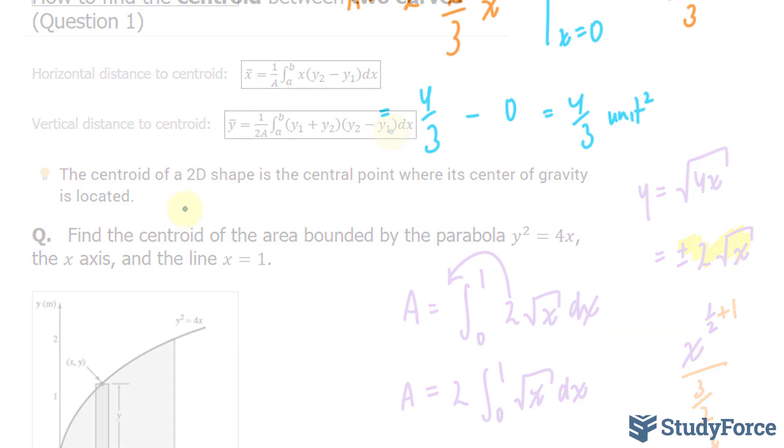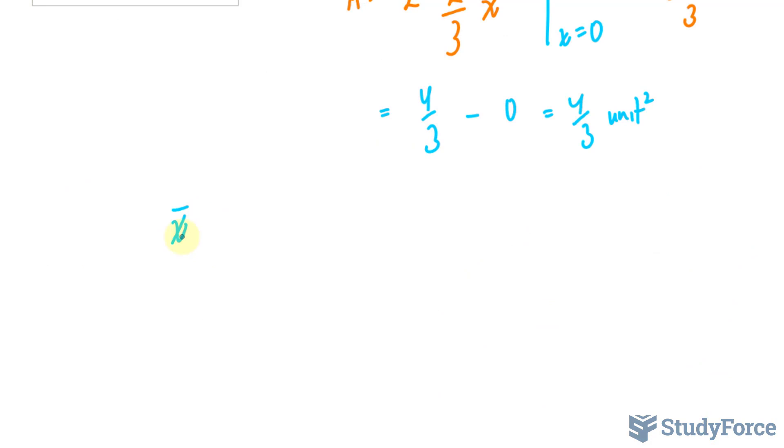Let's go ahead and do that. So x-bar, the x-coordinate of the centroid, is equal to 1 over my area, 4 over 3, times the integral between 0 and 1, x, from the formula itself, and we had y2 minus y1, dx.